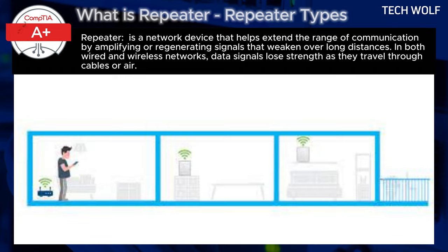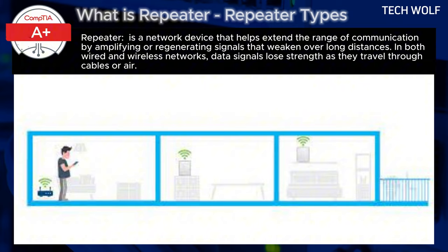Here is a real-world example. Imagine a large office building where the main router is located in the central office, but the signal doesn't reach the far end of the building. Installing a repeater in the middle of the building amplifies the signal, ensuring that employees at the far end of the building can connect to the network with strong signal strength.